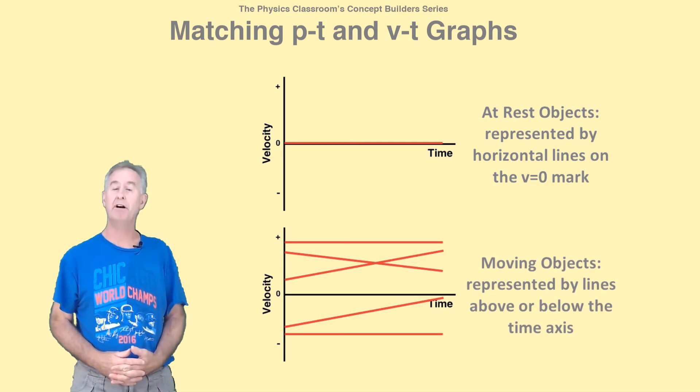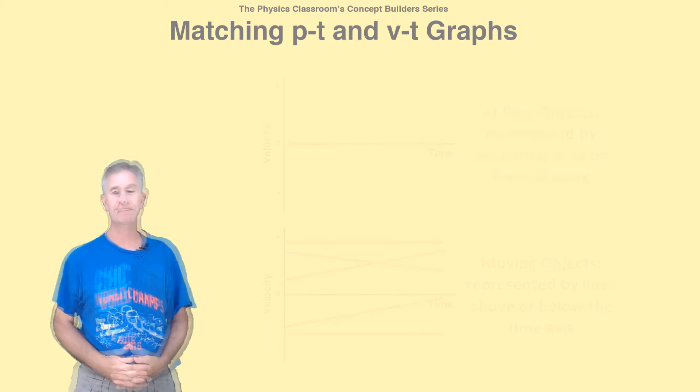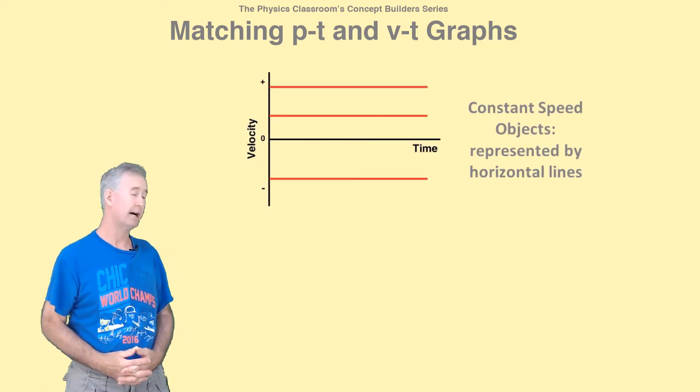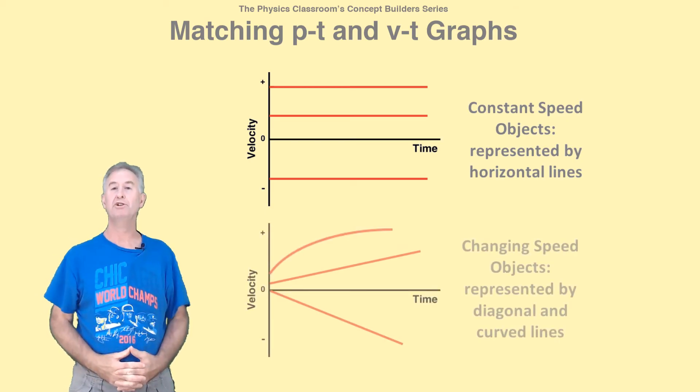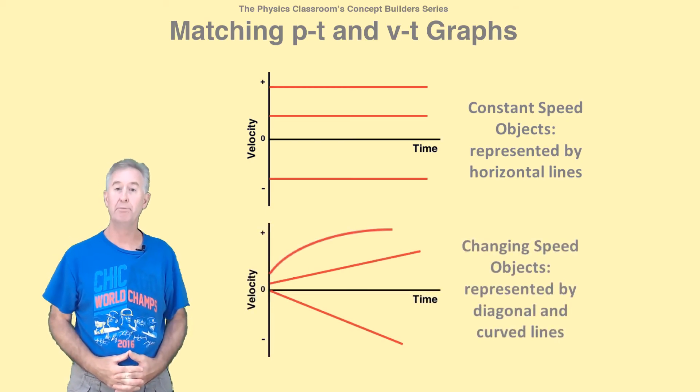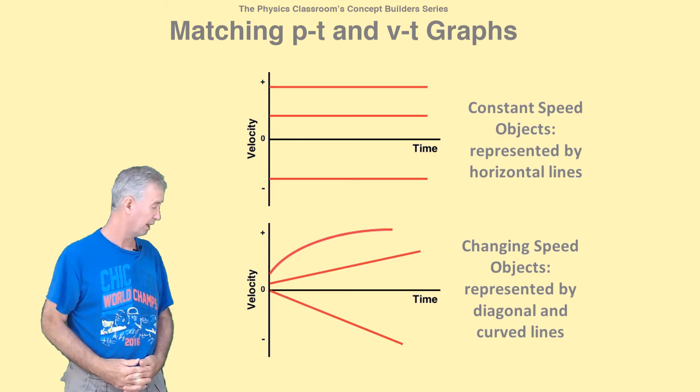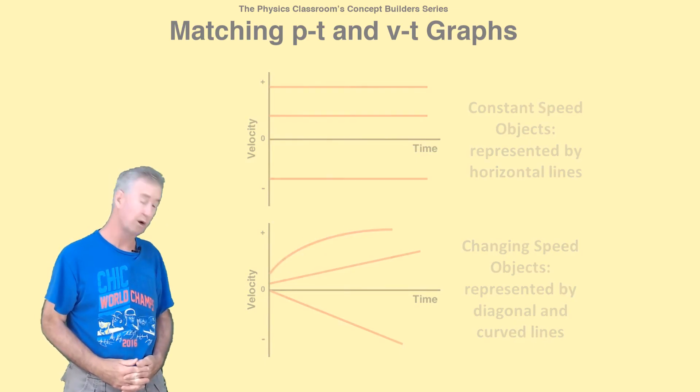Constant speed objects are represented by horizontal lines. But changing speed objects are represented by lines with slope, either straight diagonal or curved lines.